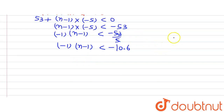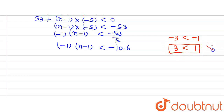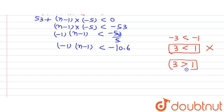Now let us understand an important concept. We know that minus 3 is less than minus 1. If I divide both sides by minus 1 and do not change the sign, I get 3 less than 1 — but that is incorrect, since 3 is greater than 1. So whenever we divide an inequality by a negative number, we must flip the sign of the inequality.